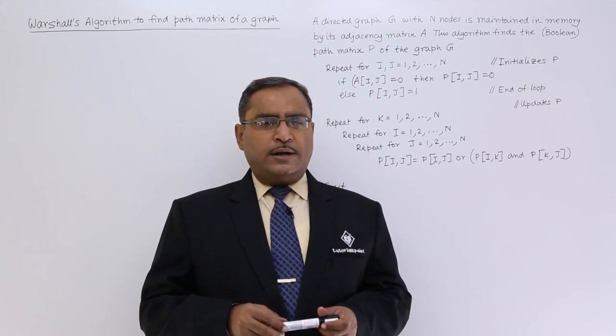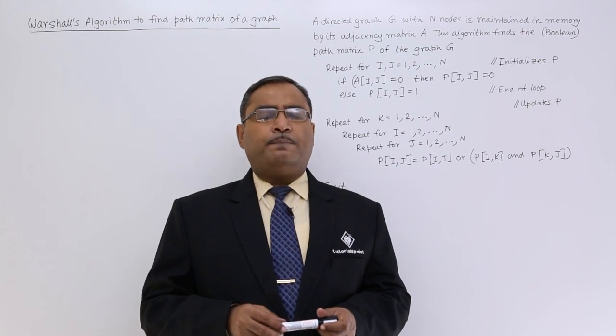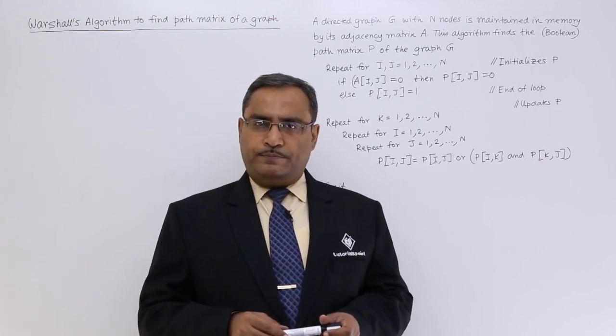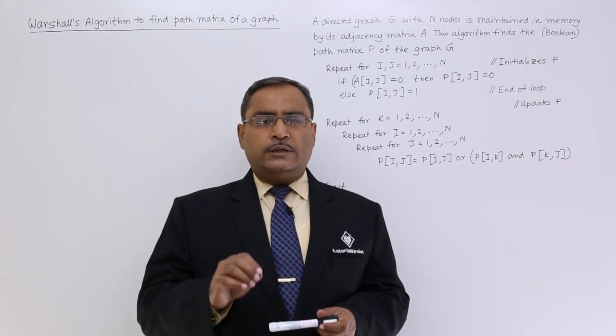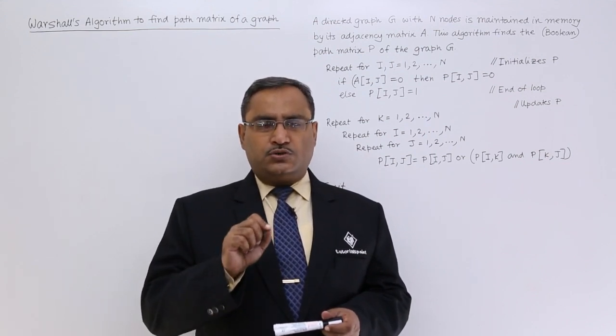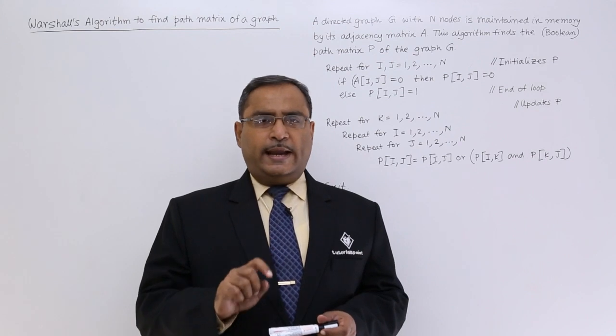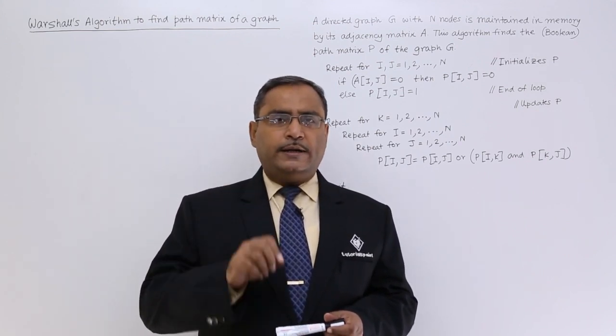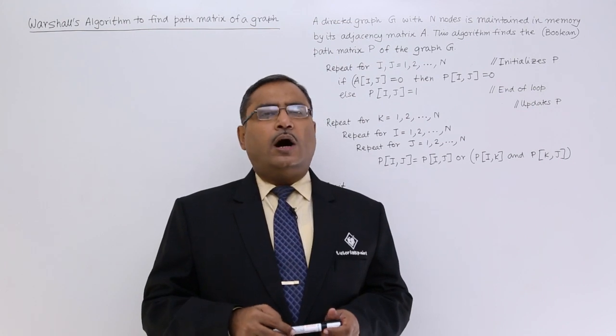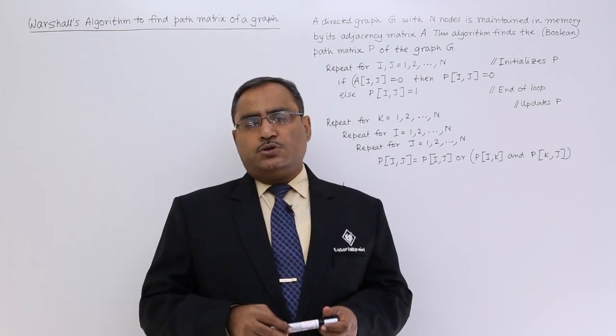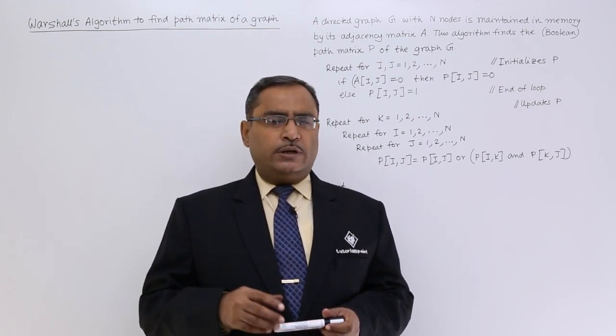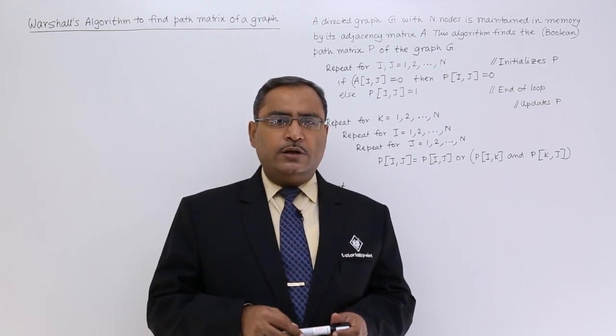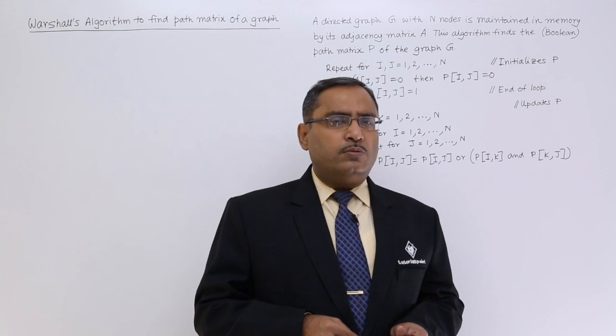That means Warshall's algorithm gives us the path matrix, and the matrix will be of the form boolean. It will tell whether from this particular source vertex or node, can I reach a target vertex. That answer will be obtained at the respective location of the matrix. This path matrix will be obtained at the end of the execution of Warshall's algorithm.